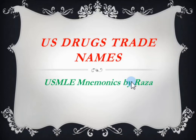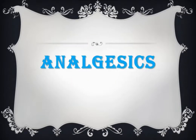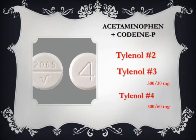U.S. drugs, trade names. Category: analgesics. Combination of acetaminophen and codeine phosphate, trade names: Tylenol-2, Tylenol-3, and Tylenol-4.